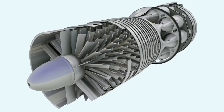We'll now examine the principles of the axial flow compressor, which are basically the same as those of the centrifugal flow compressor. The axial flow compressor converts the velocity of the airstream — its kinetic energy — into potential energy or pressure. The means which it uses to achieve this conversion are, however, different to those used in the centrifugal compressor.